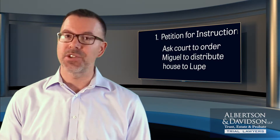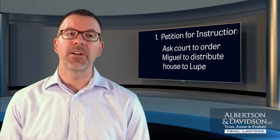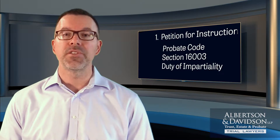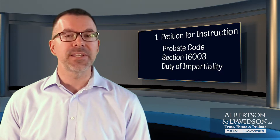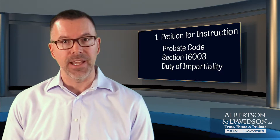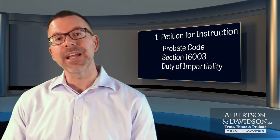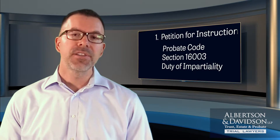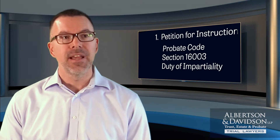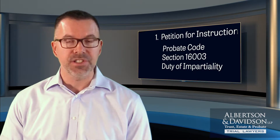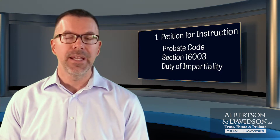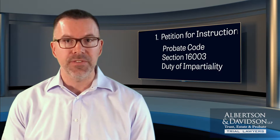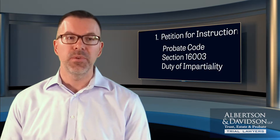The problem for Miguel is he's the trustee. Under Probate Code section 16003, where there are two or more beneficiaries of a trust, the trustee must treat everybody impartially. So Miguel really can't fight for himself as a trust beneficiary because he has to treat everybody equally. There's a real chance that Lupe's petition for instructions may be successful in getting the probate court to order an in-kind distribution of her share of the trust through the family home.